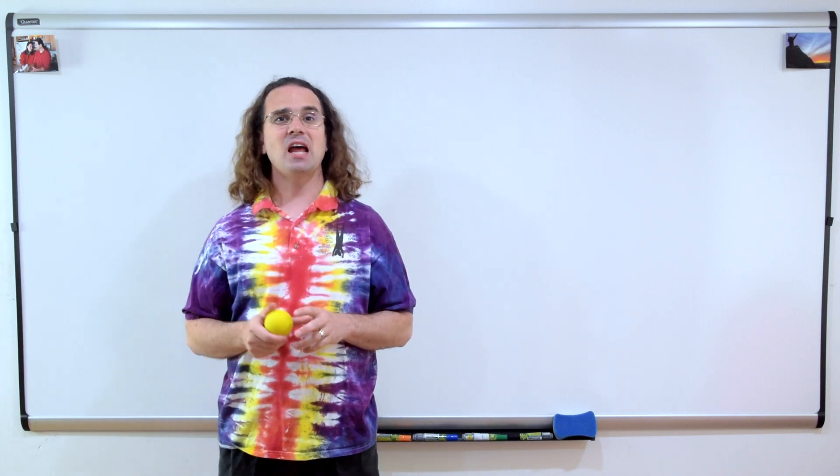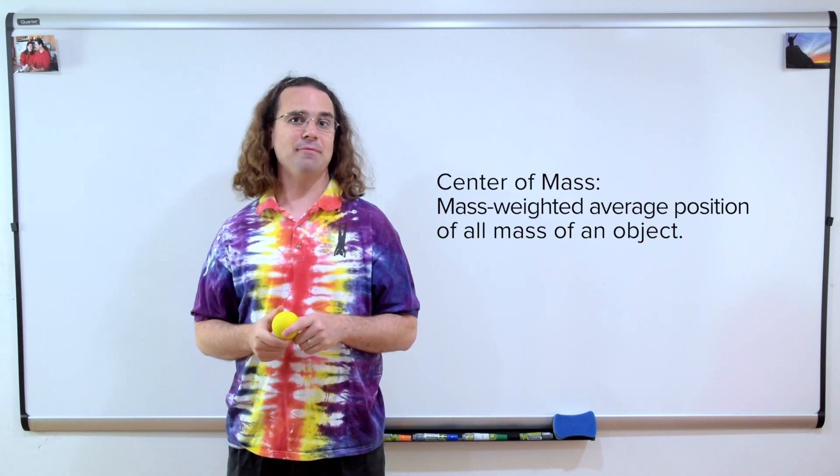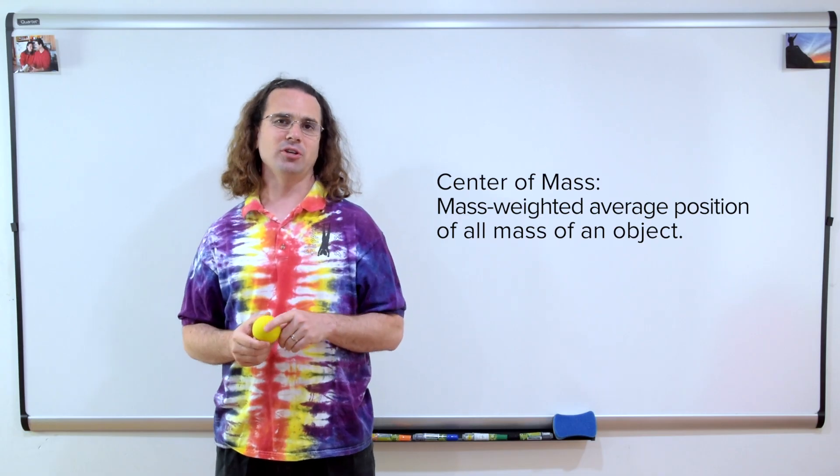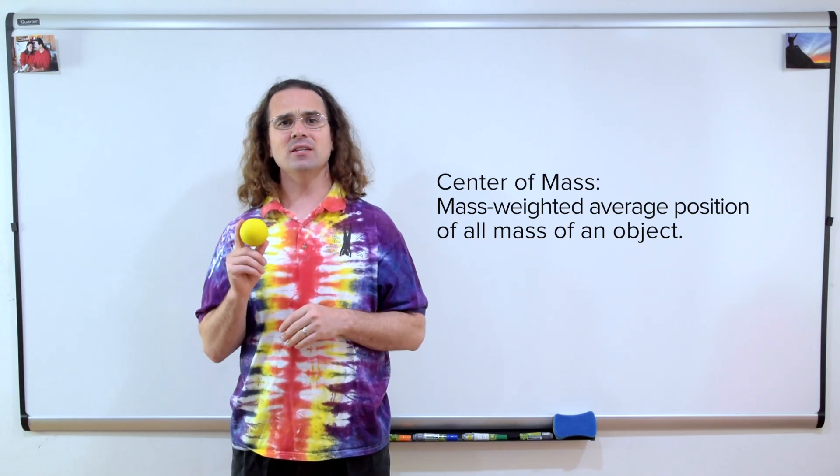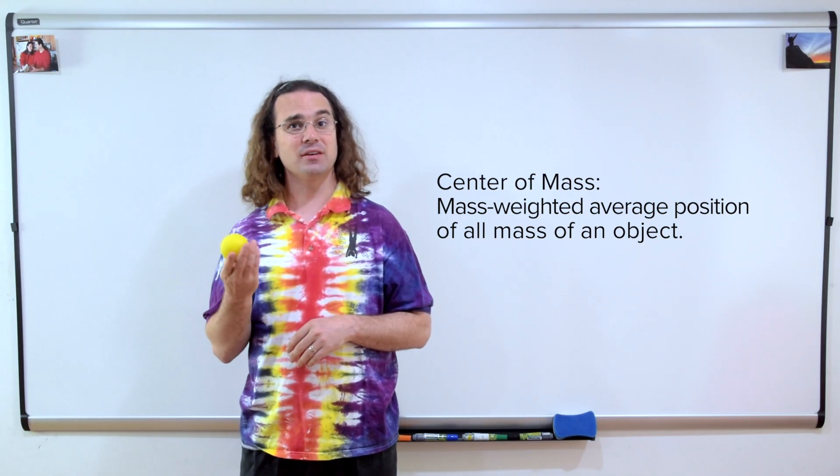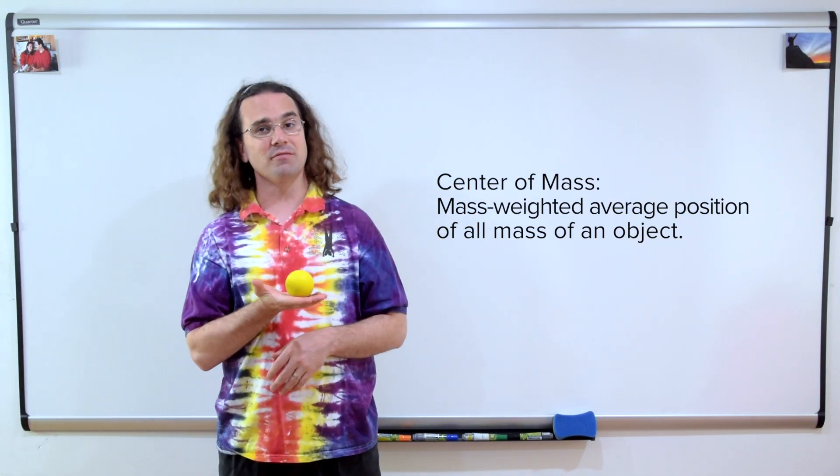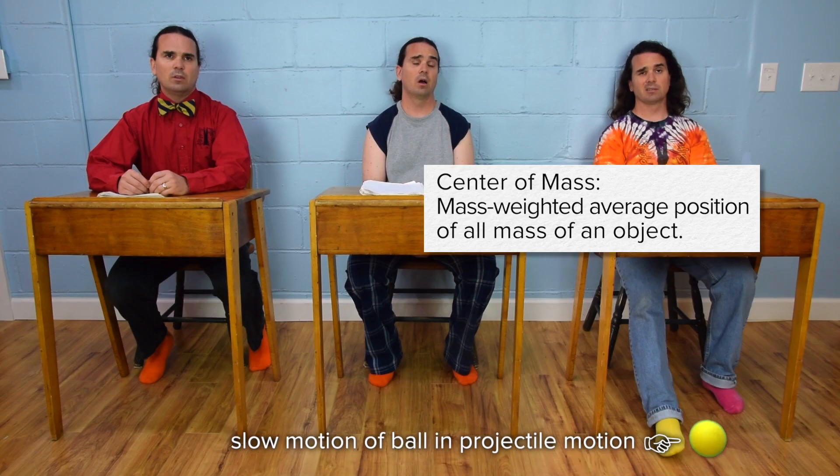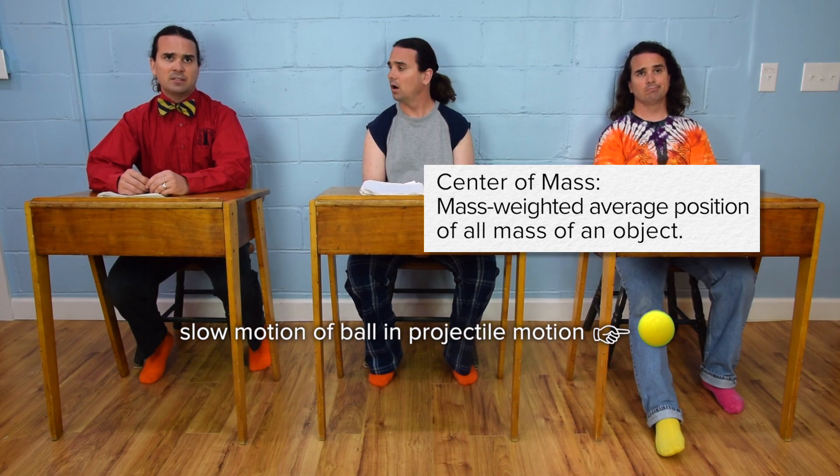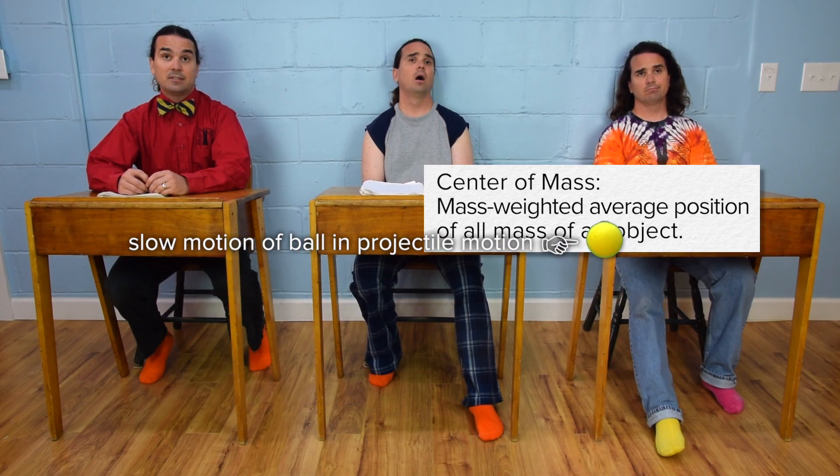Good morning. The center of mass of an object is the mass-weighted average position of all the mass of the object. For an object with constant density and symmetrical shape like this lacrosse ball, the center of mass is directly in the center of the object. The center of mass of a constant density sphere is directly in its center.